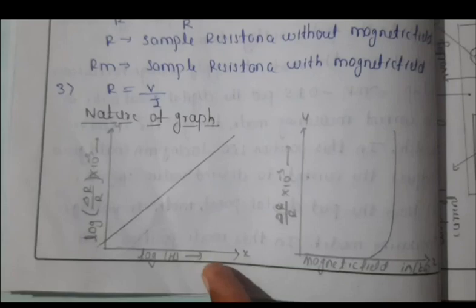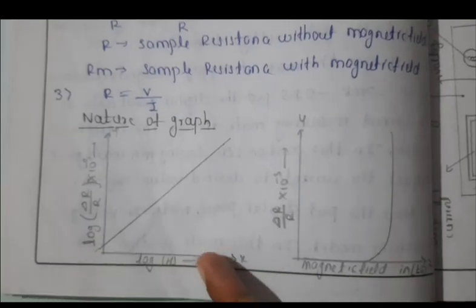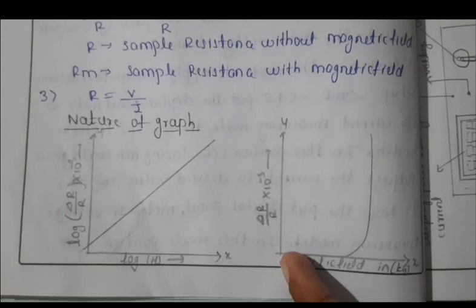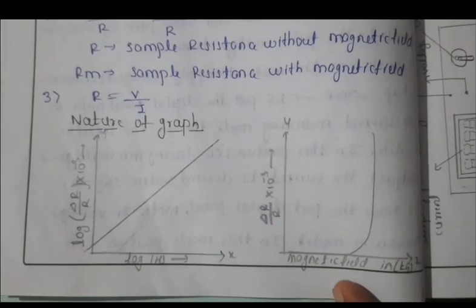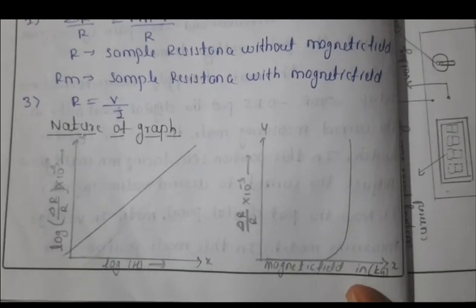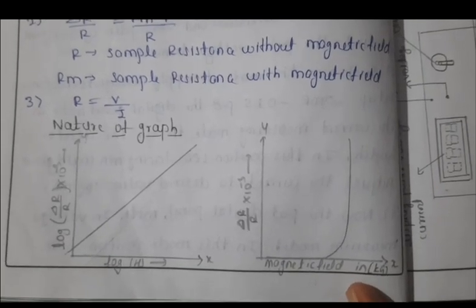Log of delta R by R into 10 to the power minus 3 versus log of magnetic field H, and another graph: ratio of change in resistance to the resistance versus magnetic field. We have to plot these graphs.